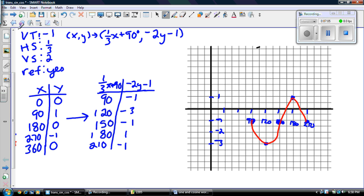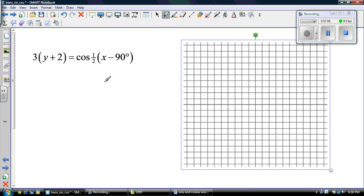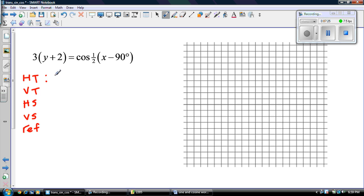Let's try cos. And cos is pretty much the same. It's pretty much the same process. The only difference is, of course, the table values. So we started off the same way. We've got HT, VT, HS, VS, REF. So I got my HT is 90, my VT is negative 2, my HS is 2, my VS is 1 over 3, and my REF is no. There's no negative sign there, so it should be no. So REF is no.